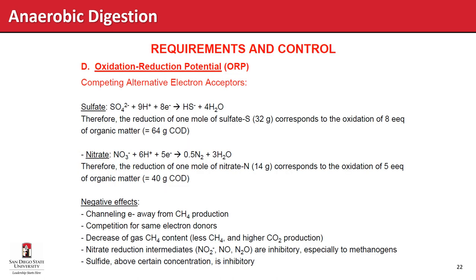Oxidation reduction potential (ORP) tells us how reducing conditions are in the digester. Compounds like sulfate or nitrate raise the ORP and can inhibit anaerobic digestion — they channel electrons away from methane production toward nitrate and sulfate reduction, decreasing methane content in the gas. Some intermediates can be inhibitory, and sulfide itself is inhibitory, so excessive sulfate reduction can lead to inhibitory concentrations.